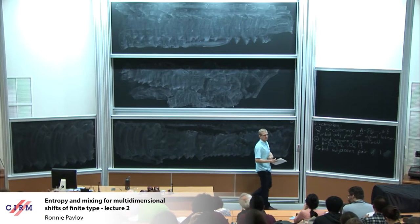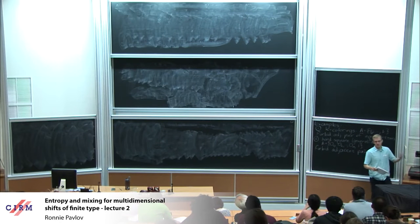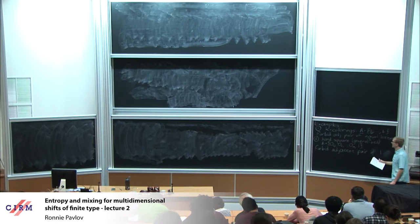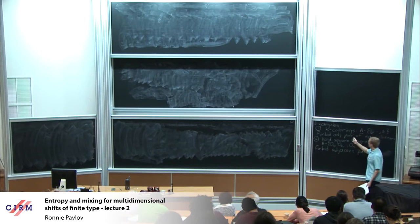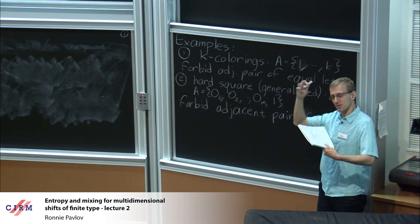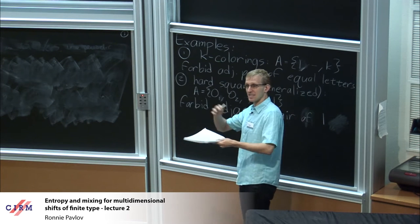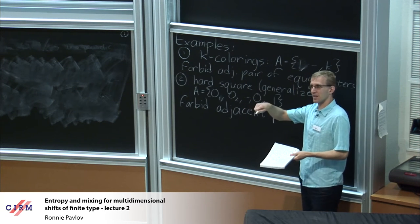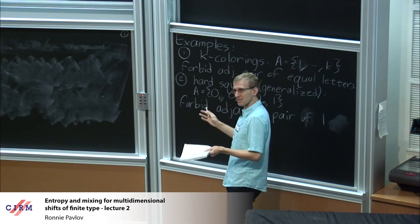I just wanted to remind you of a couple of examples from last time. We won't have time to go through all of the definitions again, but at least the examples I want to refer to repeatedly. I changed one of them very slightly. So the first example are the K colorings. My setting is I have some letters, I have Z^D, and I'm going to make just some rules on which pairs of letters can sit next to each other.